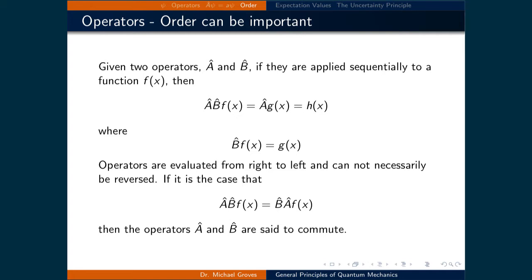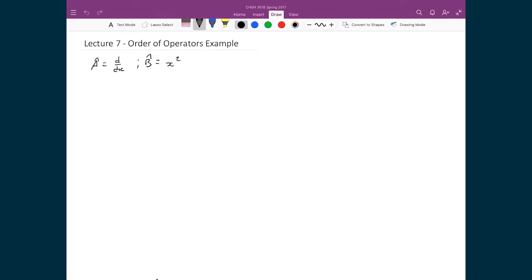Given two operators, â and b̂, if they are applied sequentially to a function f, then we can say â b̂ f, which gives â g, and eventually h. This assumes that when b̂ is applied to f, we get g. Remember that operators are always applied from right to left, so the closest one to the function is always evaluated first. If the order of the operators were reversed — b̂ â f — we would say that â and b̂ commute if b̂ â f also results in h, meaning the exact same thing.